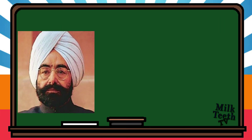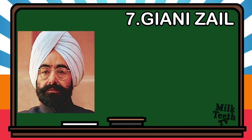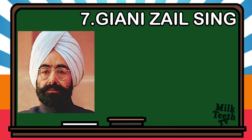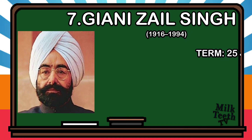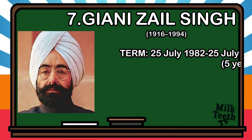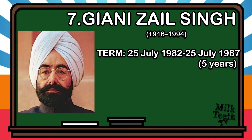Seventh President of India: Giani Zail Singh. Born in 1916, Giani Zail Singh became the President of India on 25th July 1982 and served till 25th July 1987, for a period of 5 years.